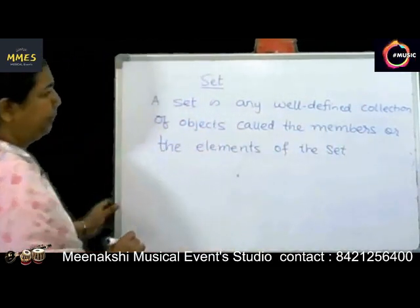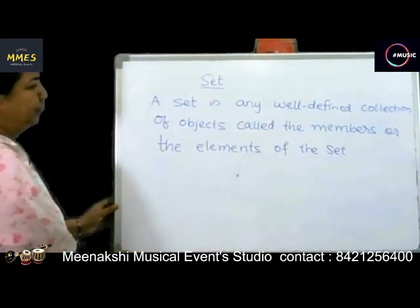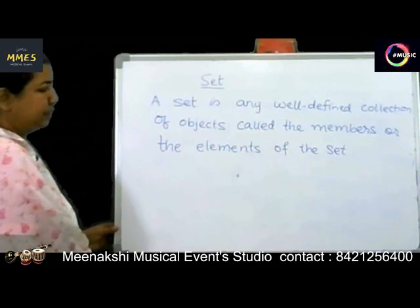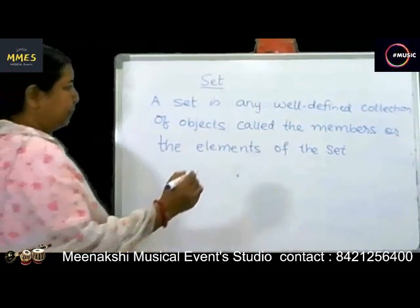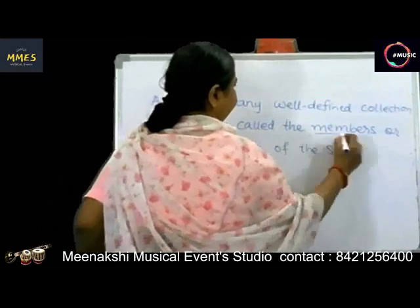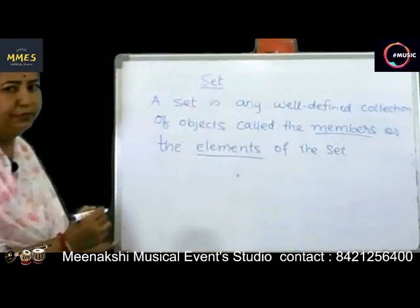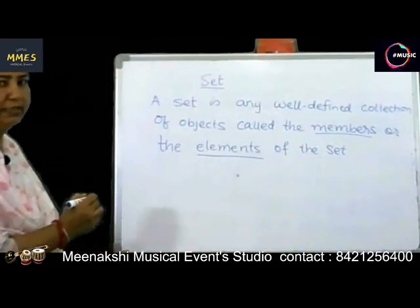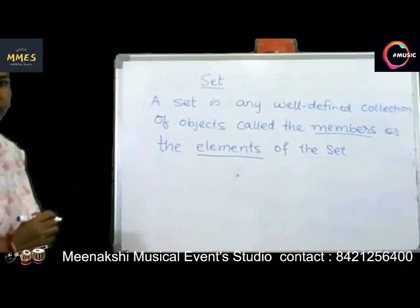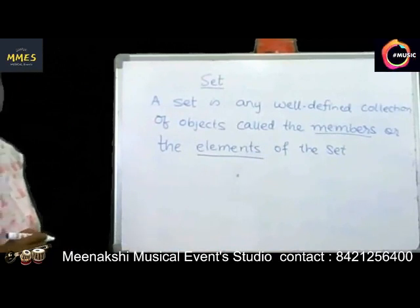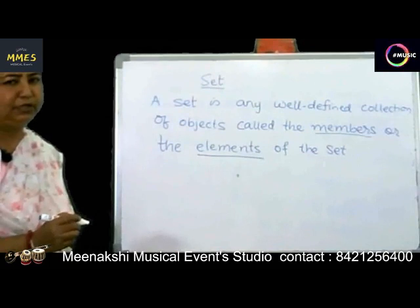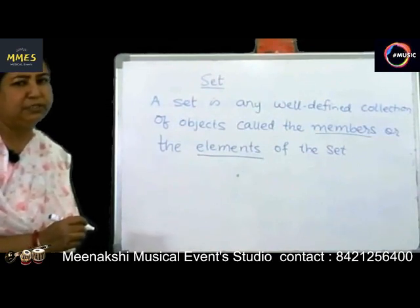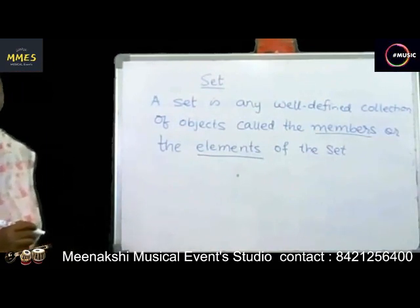A set is a well-defined collection of objects called the members or the elements of the set. For example, there is a collection of all wooden chairs, a collection of all one-legged blackbirds, or a collection of real numbers between 0 and 1. Each one is a set.